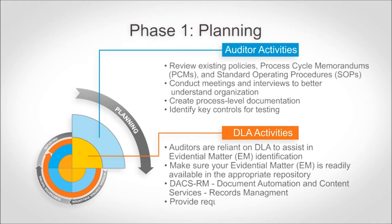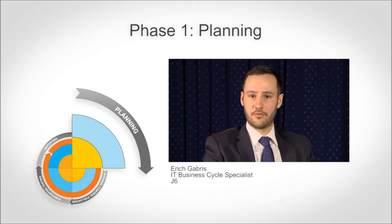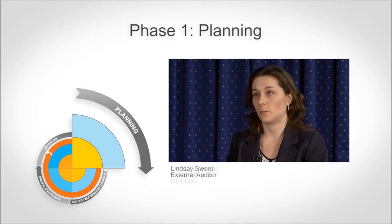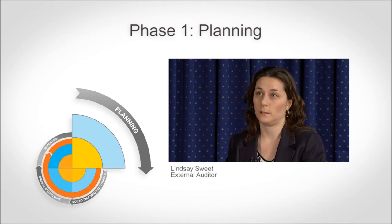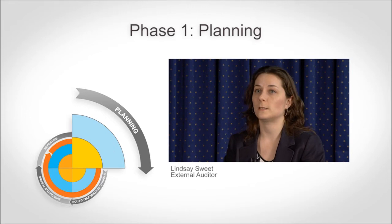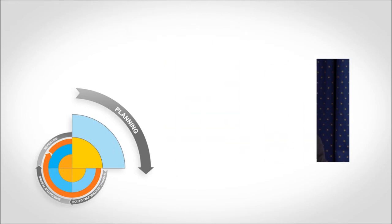It is each organization's responsibility to provide all information requested in a timely manner. When an auditor comes in, the first thing they're going to do is go through their planning phase — preliminary interviews and requests for initial documentation. An auditor will put together the prepared-by-client listing, or PBC list, which should have all of your detailed populations and may include some samples.